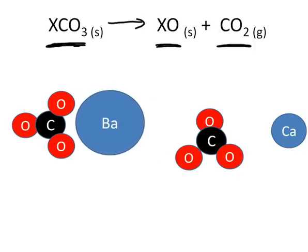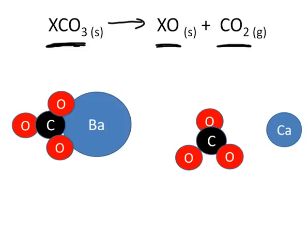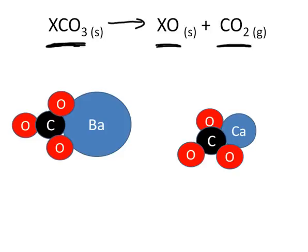Barium will come along and form barium carbonate, and it has no effect or little effect on the carbonate anion. However, if we bring calcium in, calcium has a high charge density. And what that does is it polarizes the carbon atom.